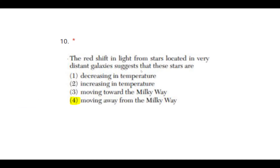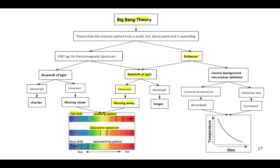Number ten: the redshift in light from stars located in very distant galaxies suggests that these stars are — number four — moving away from the Milky Way galaxy. If you go to your Regents Review Packet, you'll see that redshift of light is evidence for the Big Bang Theory, indicating that a celestial object is moving away from us. Compared to a lab electromagnetic spectrum, if a distant star or galaxy is moving away, those same spectral lines for an element should shift toward the red side.